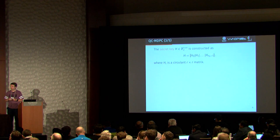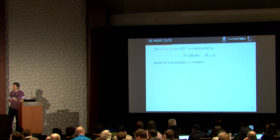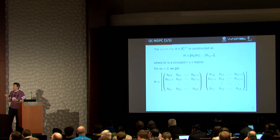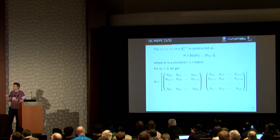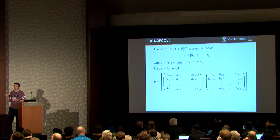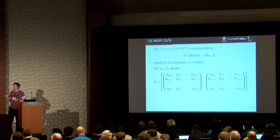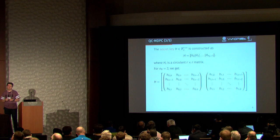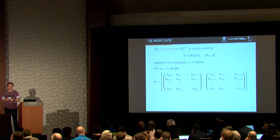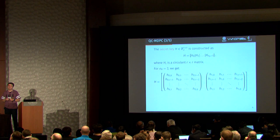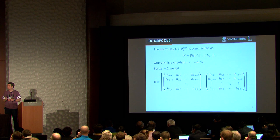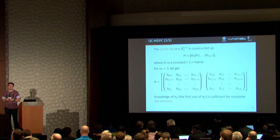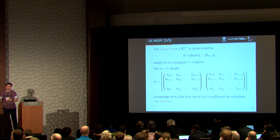The secret key is constructed like this, where each HI is a circulant R by R matrix. So for example, we have, for 80-bit security, a secret key like this, where each row of the sub-matrices is a cyclic representation of the first row. So that means we only need to save or transmit the first row of each sub-matrix. And actually, if we use the public key, we only need the first row of the first sub-matrix in order to reconstruct the key. So we will use this in an attack later.